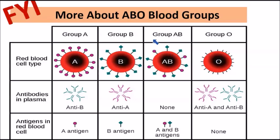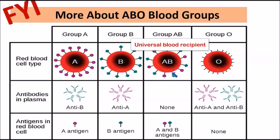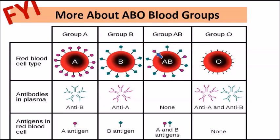Group AB individuals are known as the universal recipients — they can receive blood from any individual, whether group A, B, or O. This is because they have a combination of both A and B antigens on their red blood cells, so they will not produce antibodies against type A or type B blood. Group AB is the universal recipient because they can receive blood from any person.